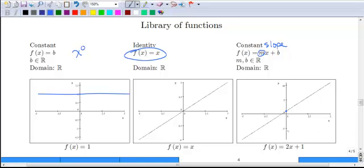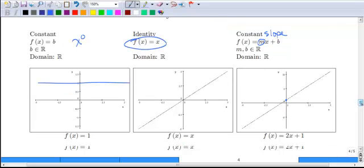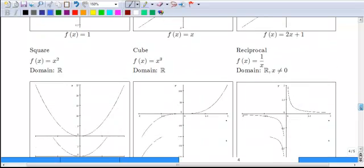Again this is kind of a rectangular graph so it doesn't quite look as steep as it should but in this case it is a rise to run of two to one. So those are the ones you're probably most familiar with.